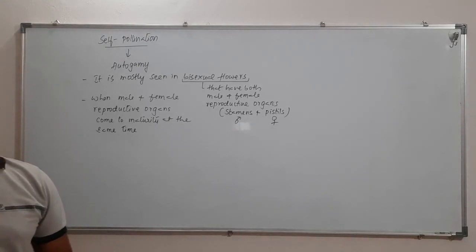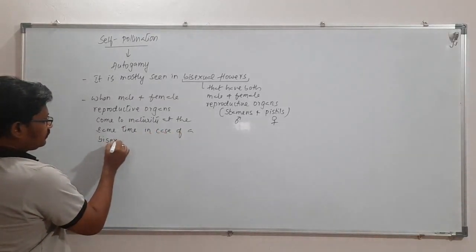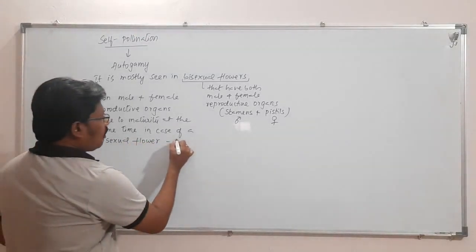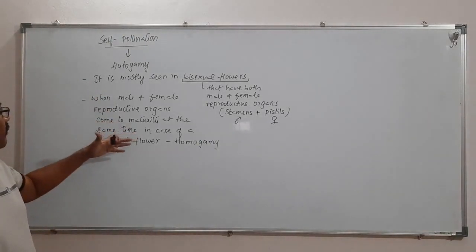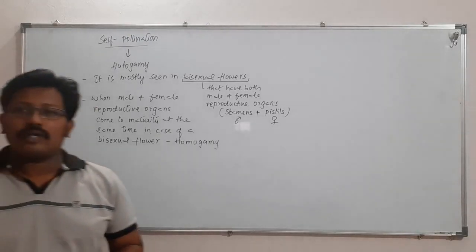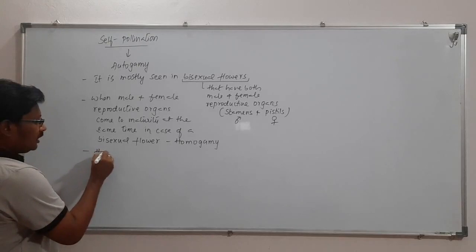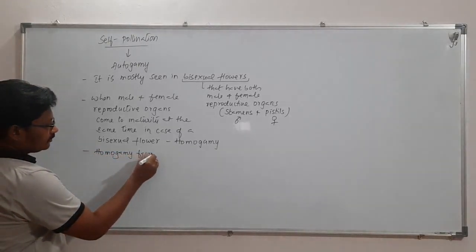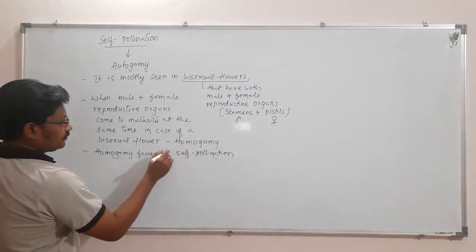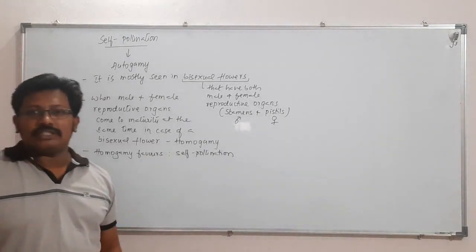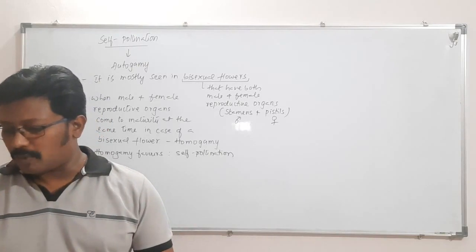In a bisexual flower, when male and female reproductive organs mature at the same time, the condition is called homogamy. This homogamy always favors self-pollination. Now let's see a few advantages and also a few disadvantages of self-pollination.